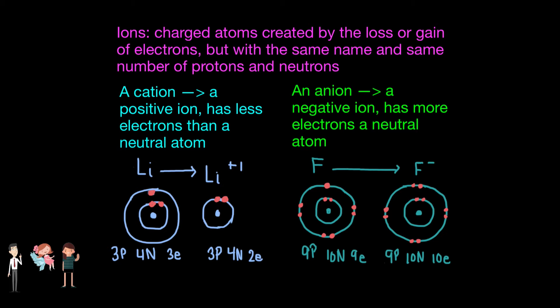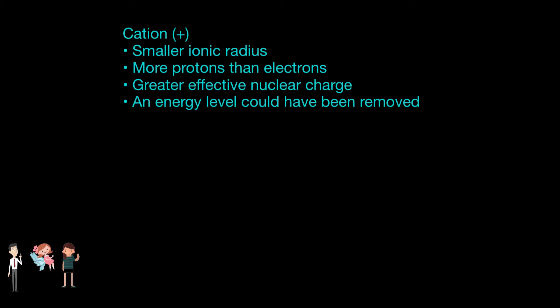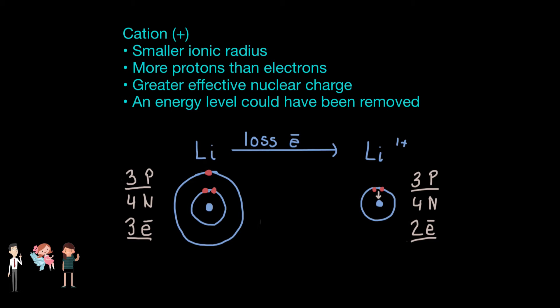Ellen Lee, the chemistry fairy, can help explain ionic radius. Let us begin with cations, the positive ions. Since cations have fewer electrons than the original atom, a cation has a smaller ionic radius than a neutral atom of the same element. Since its proton-to-electron ratio is unbalanced — in which there are more protons than electrons — the effect of nuclear charge is greater, making the radius smaller.